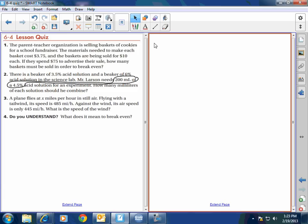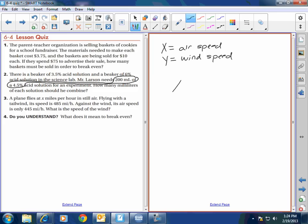Flying with a tailwind, remember, what does a tailwind do? Does that? It pushes behind you. Correct. So that is helping you. So with a tailwind, the speed is 485 miles per hour. Against the wind, its airspeed is 445 miles per hour. I'm going to call X my airspeed, and I'm going to call Y my windspeed.